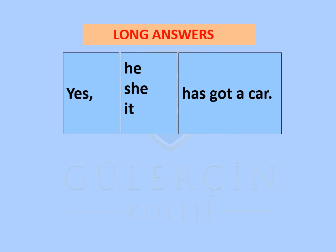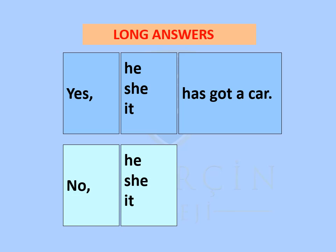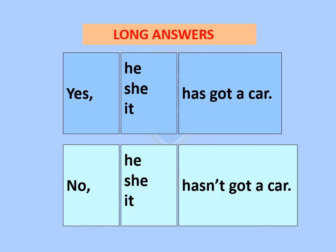Yes, he has got a car. Yes, she has got a car. Yes, it has got a car. No, he hasn't got a car. No, she hasn't got a car. No, it hasn't got a car.